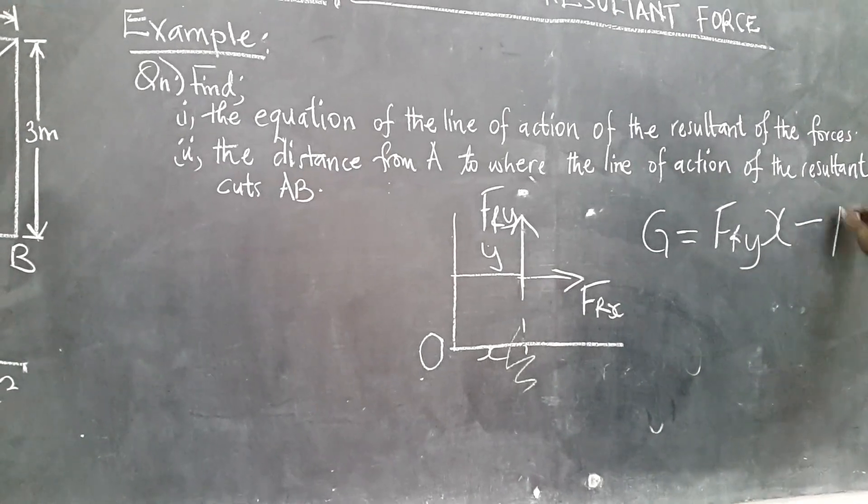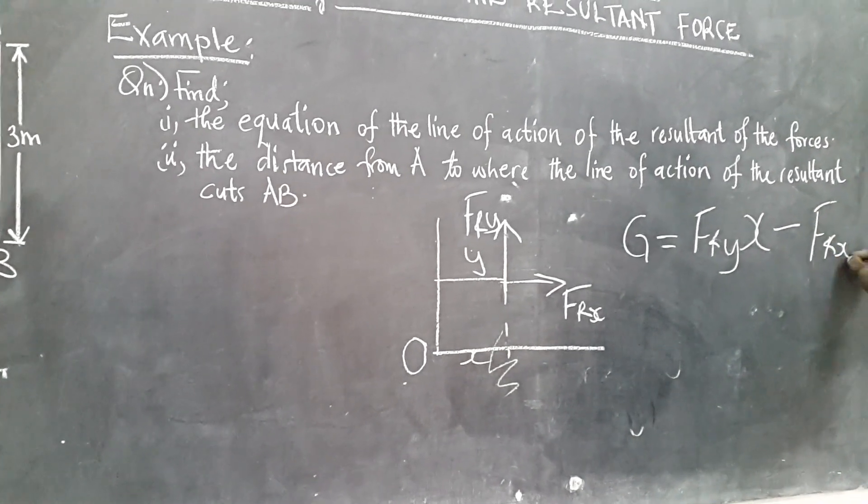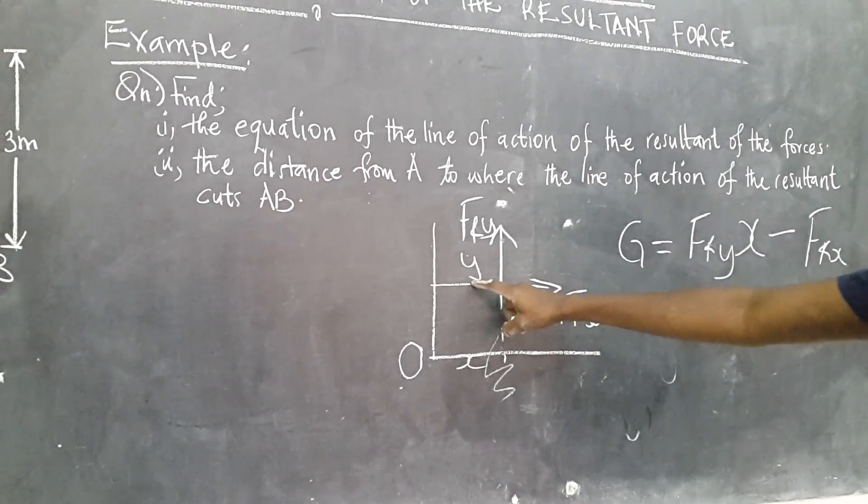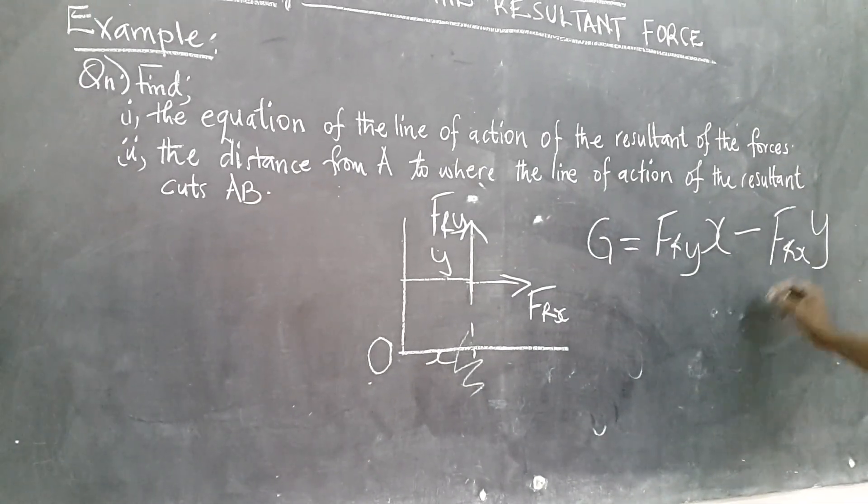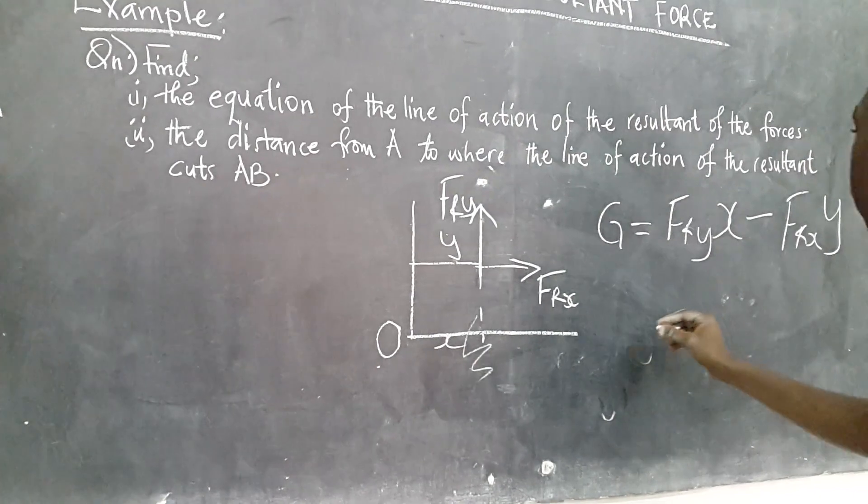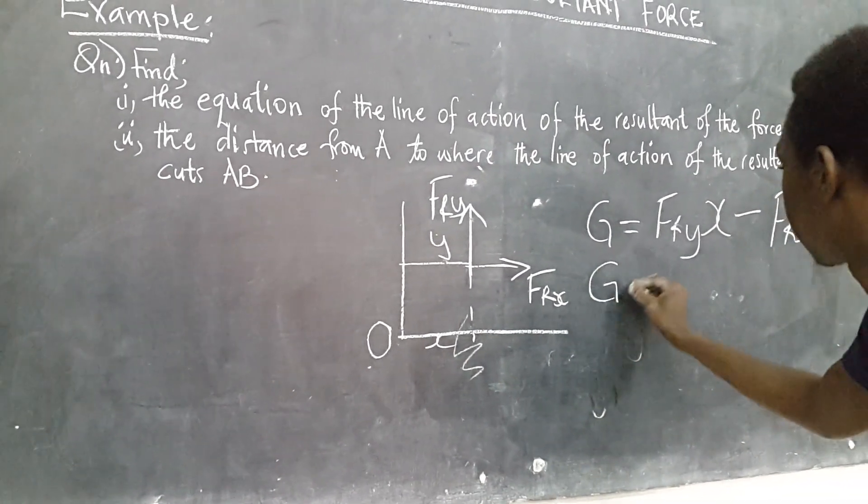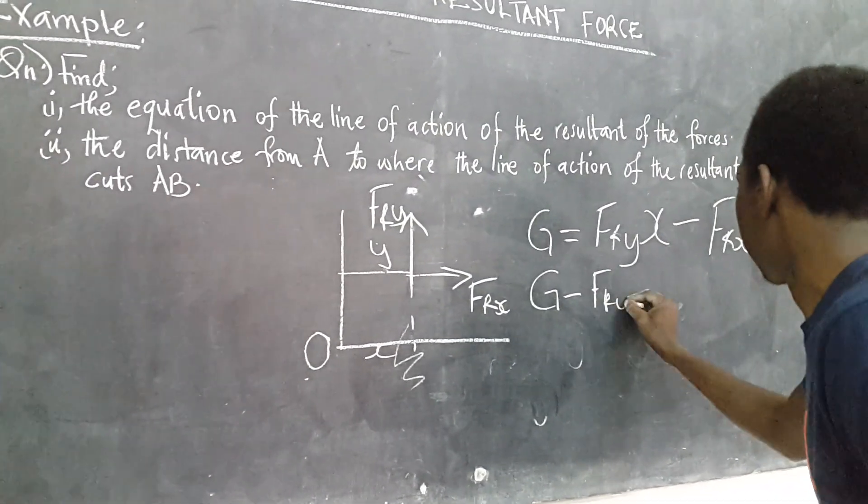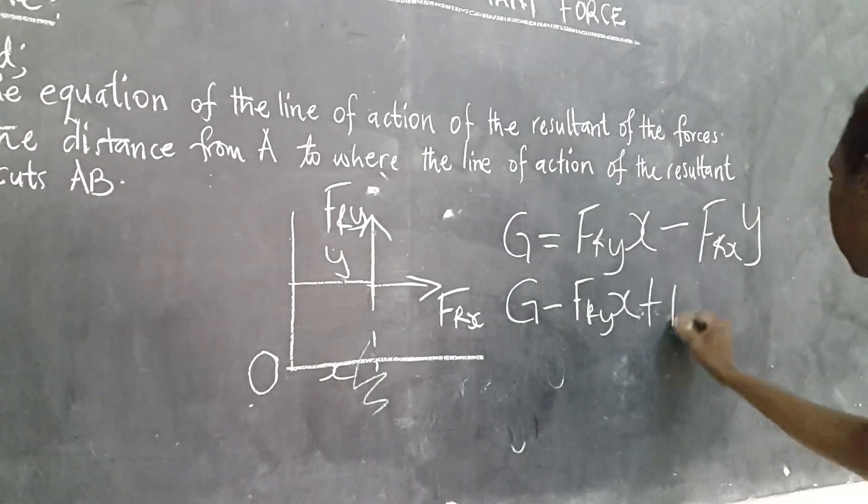minus FRX times Y, and it's negative because it's clockwise. So the equation of the line of action will be G minus FRY times X plus FRX